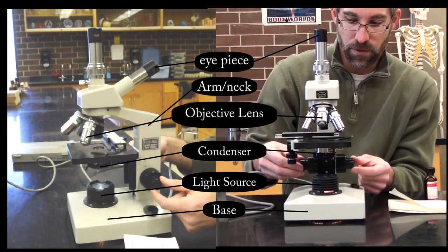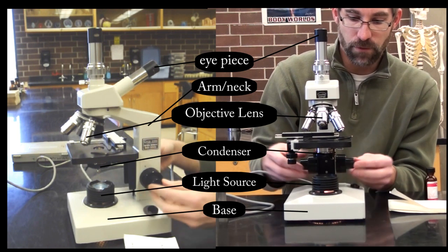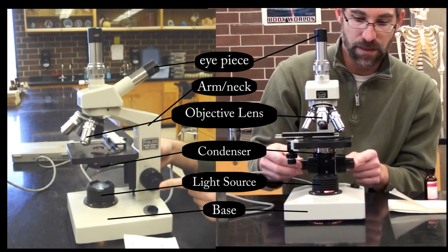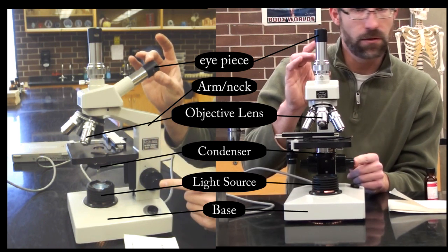As we move out, we have what we call a fine adjustment knob. So once we get it roughly in focus, we can use this fine adjustment to get it really nice in focus as we look through the eyepiece.